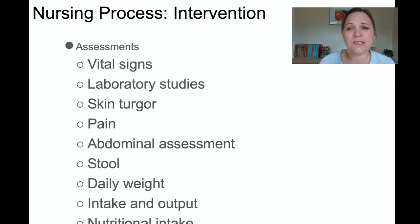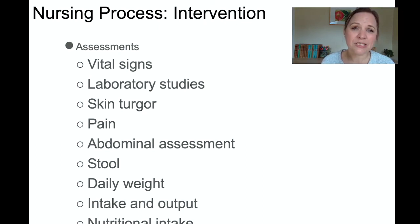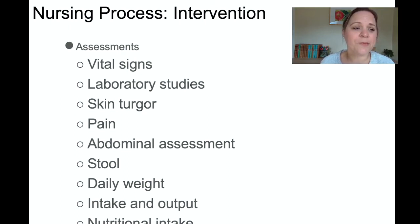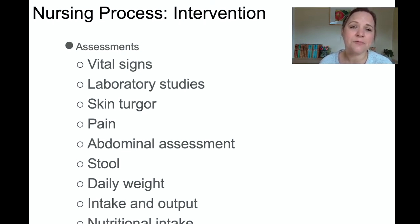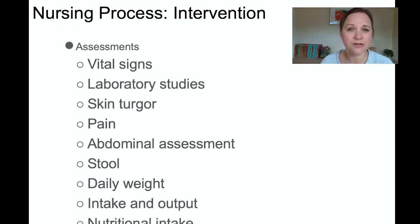We're going to assess skin turgor because we're worried about nausea and vomiting, and assess pain because these patients present with a significant amount of pain. Do a complete abdominal assessment. Check their stool, daily weights, intake and output, and nutritional status. If the bile ducts are obstructed, the stool is often light-colored, pale, or chalky because bile isn't mixing with it — bile is what gives stool its dark color, so you may notice clay-colored stools.